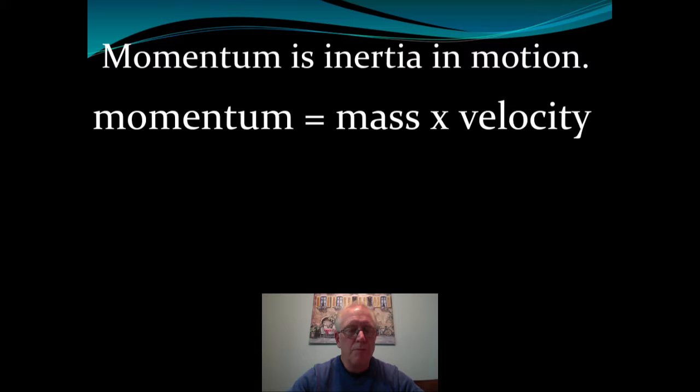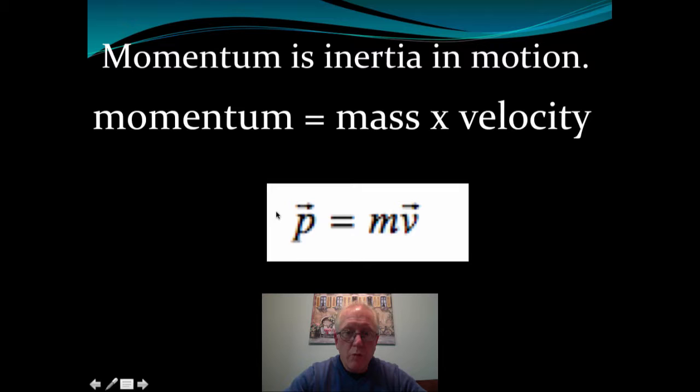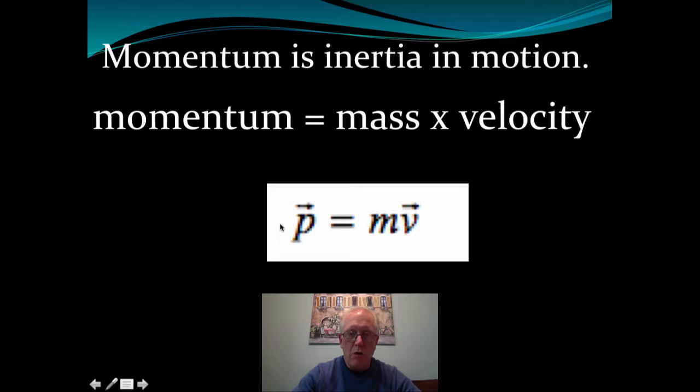On your AP Physics formula sheet, the formula looks like this: p = mv, where p is the symbol used for momentum. You'll notice arrows above both v and p, indicating they are vector quantities with direction. So momentum has a direction — mass doesn't, but mass multiplied by velocity gives you a vector value.